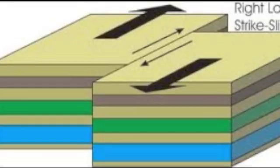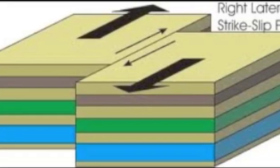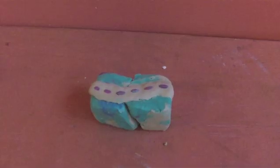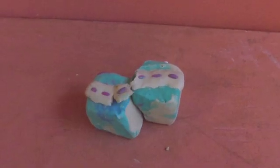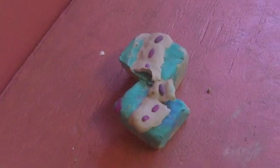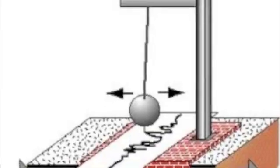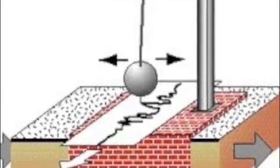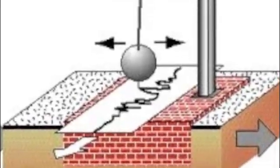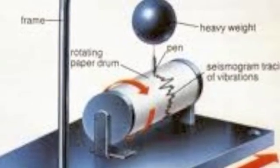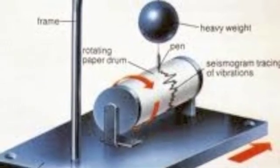A strike-slip fault usually occurs on a vertical fault, therefore having no hanging wall or foot wall. These are faults where the crust breaks side-to-side, due to the plates pulling them in that same motion. Scientists have devices called seismographs that detect vibrations in the Earth from earthquakes. Seismographs record movement in the Earth by making marks on a graph based on how big the seismic waves are that they are picking up.